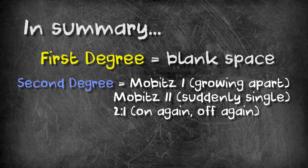In summary: first degree is a delay. Second degree is the dropped beat, with three different memorable patterns. And third degree is a complete breakdown of the relationship. Join us next time — that's it for today guys. Let us know what you think in the comments and don't forget to subscribe. We'll be seeing you very soon.